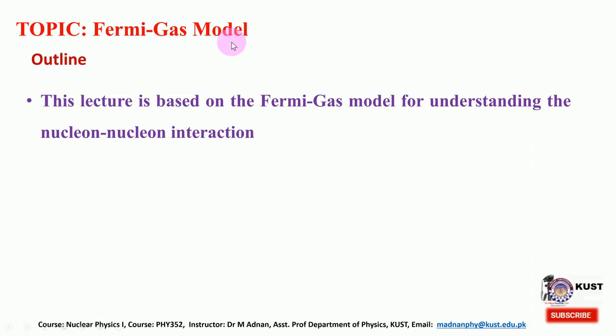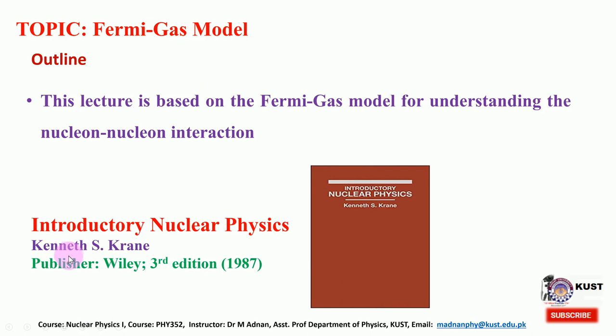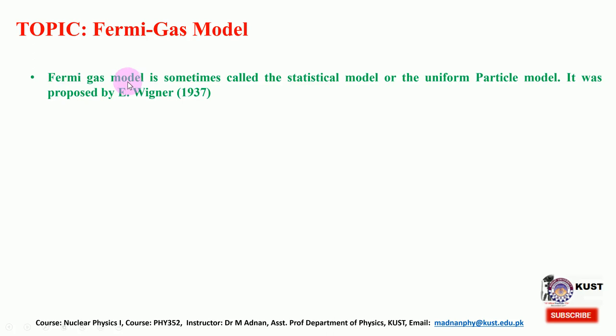The outline of this lecture is based on the Fermi-Gas model, so that the student will understand it for analyzing nuclear-nucleon interaction. In the last lecture I told you that since the nature of the nuclear force, or the mathematical description and the associated potential with the nucleon-nucleon interaction, is not straightforward, we have various models to analyze the properties of the nuclei. In this course we are following the book Introductory Nuclear Physics by Kenneth S. Crane, third edition.